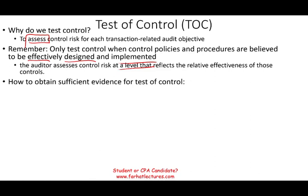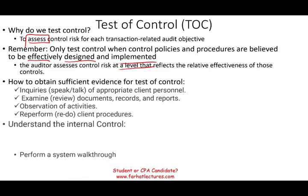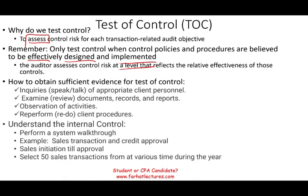To obtain evidence about internal control, you can do inquiries — talk to personnel and management — examine appropriate documentation, records, and reports, perform observation of activities (make sure they don't know you are observing), and reperform client procedures. Before that, you want to understand the internal control by performing a system walkthrough — for example, following a sales transaction from initiation through credit approval, or selecting 50 transactions from various times during the year and examining them for certain approvals.